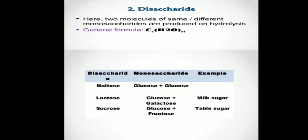Like monosaccharides, disaccharides are simple sugars and they are soluble in water. The general formula of a disaccharide is CₙH₂ₙOₙ₋₁, or we can also write it as C₁₂H₂₂O₁₁.